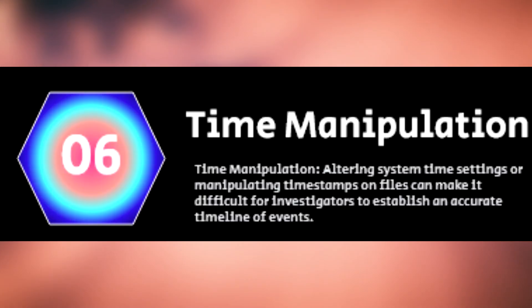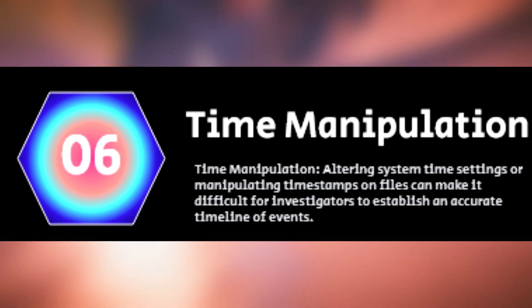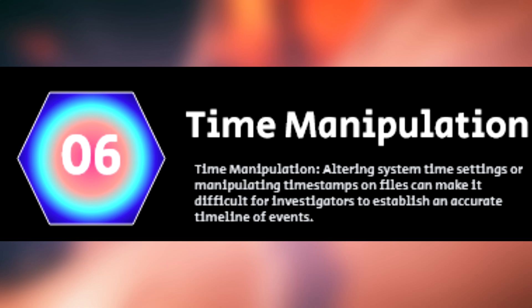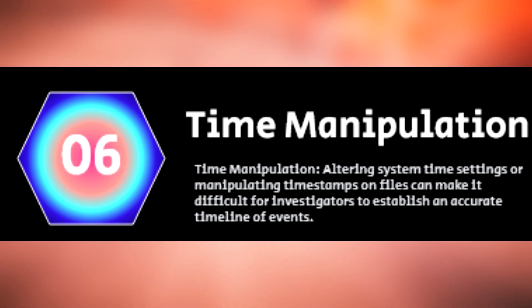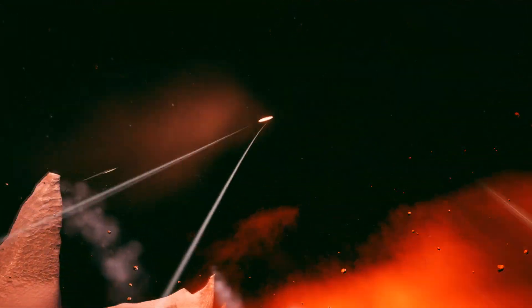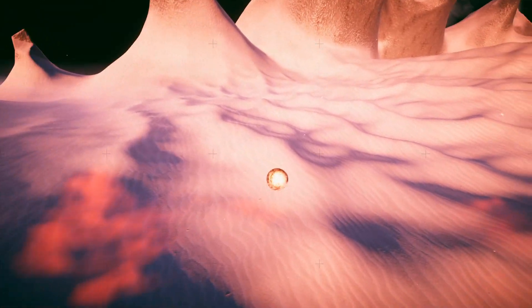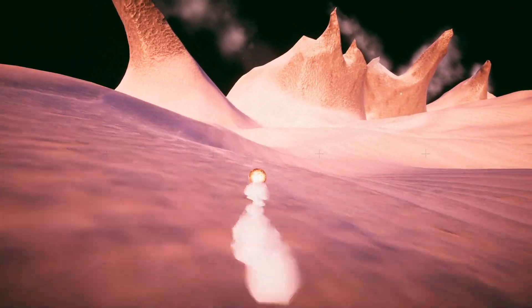The next type of anti-forensic is time manipulation, and it's the last type we're going to be talking about. With time manipulation, the person trying to stay anonymous alters the time settings or manipulates timestamps of files so that it makes it difficult to pinpoint exactly when the file was created or edited. Now that you know about the six methods of anti-forensics, let's talk about some of the Linux commands that could erase some of your steps.